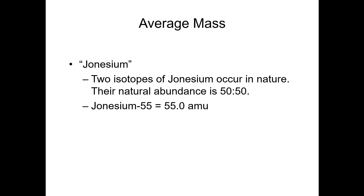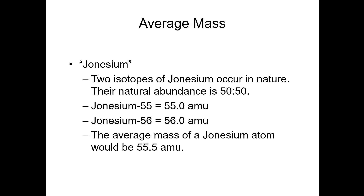The second naturally occurring isotope of Jonesium is Jonesium-56, which has a mass of 56 atomic mass units. Jonesium is a really special element because the two stable isotopes occur naturally in exactly a 50-50 ratio. So what is the average mass of a Jonesium atom? This is a really simple problem: there are two isotopes, they occur in exactly a one-to-one ratio, one weighs 55 and one weighs 56. Therefore, we just add those two numbers together and divide by two. The average mass of a Jonesium atom is 55.5 AMU.